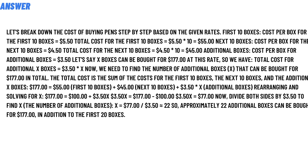Let's say X boxes can be bought at the additional rate. The total cost for additional X boxes equals $3.50 times X. We need to find the number of additional boxes that can be bought for $1.77 in total. The total cost is the sum of the cost of the first 10 boxes, the next 10 boxes, and the additional X boxes. The formula is given below as the answer to the question.